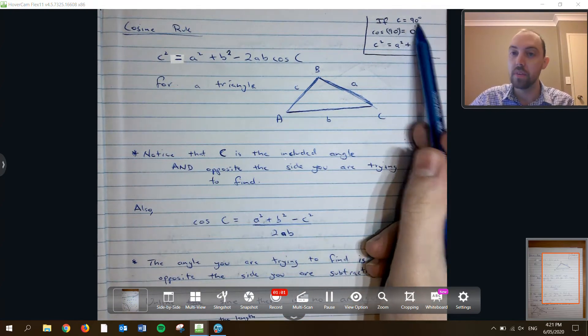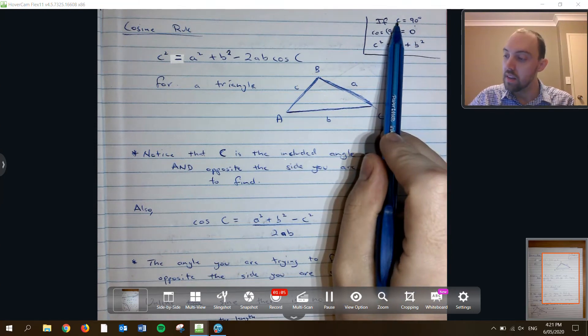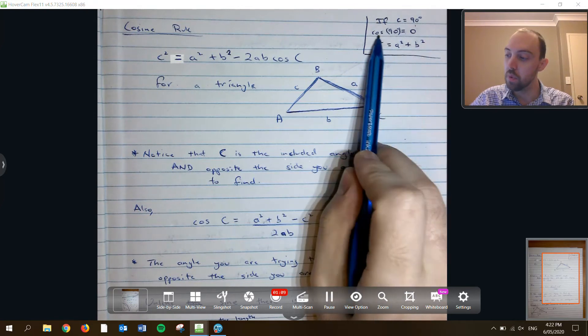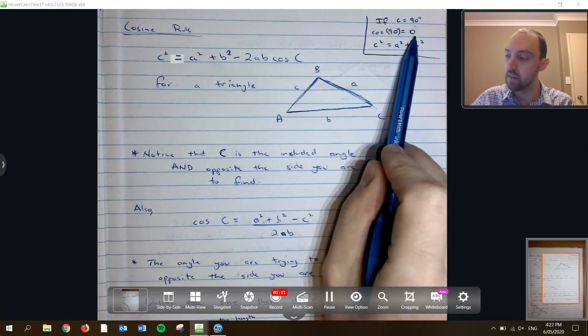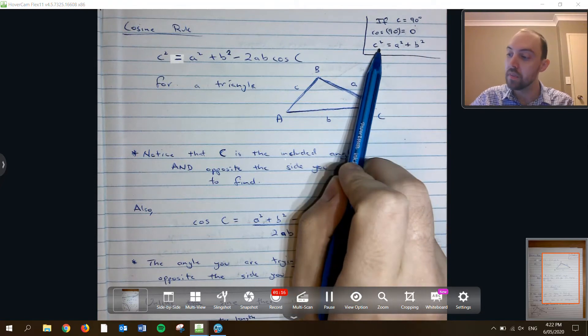If you have a look over here in the corner, because it's a little side note here, if c was 90 degrees, what is cos of 90? Well that's zero, going back to a unit circle and our exact values.